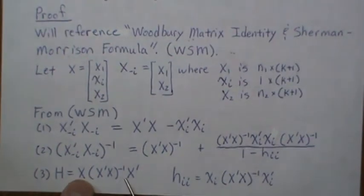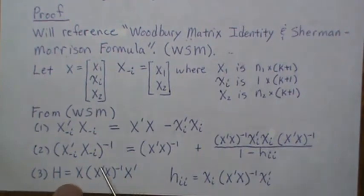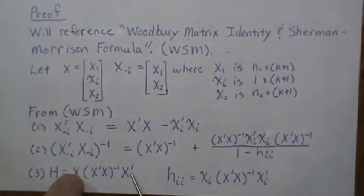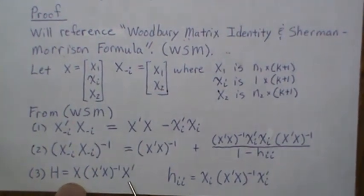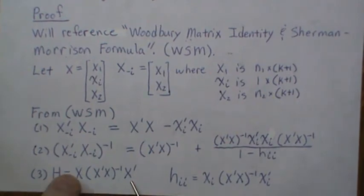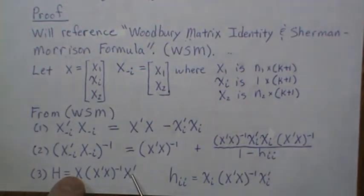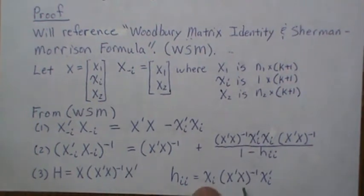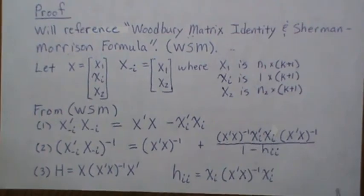The hat matrix H is X·(X_transpose·X)^{-1}·X_transpose. If we want the (i,j)th element, we take the ith row and jth column and perform that multiplication to get H_{ij}. For the ith diagonal element H_{ii}, we take the ith row and ith column — since the matrix is symmetric that's just X_i·(X_transpose·X)^{-1}·X_i_transpose. We'll make use of that in the proof.